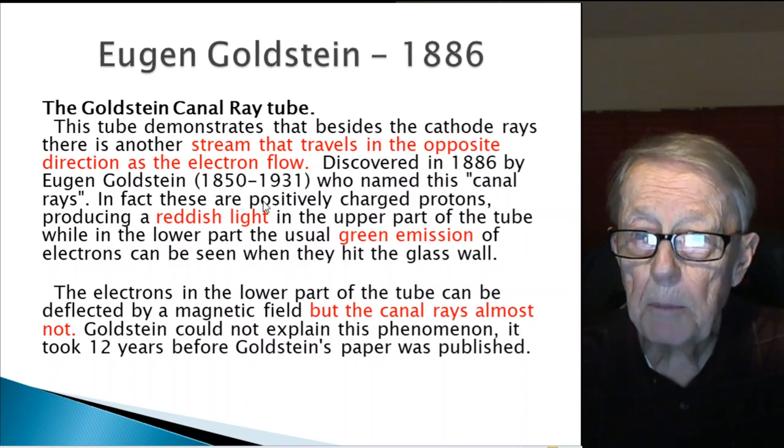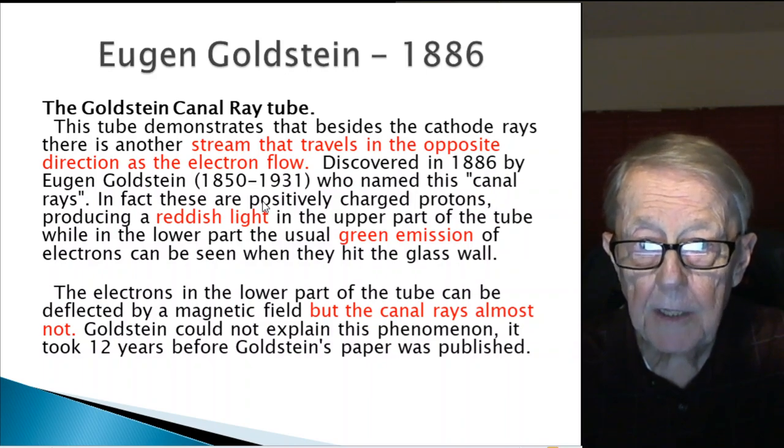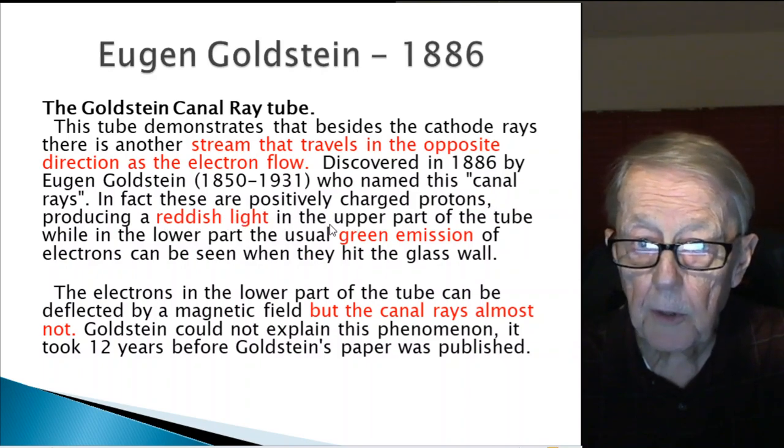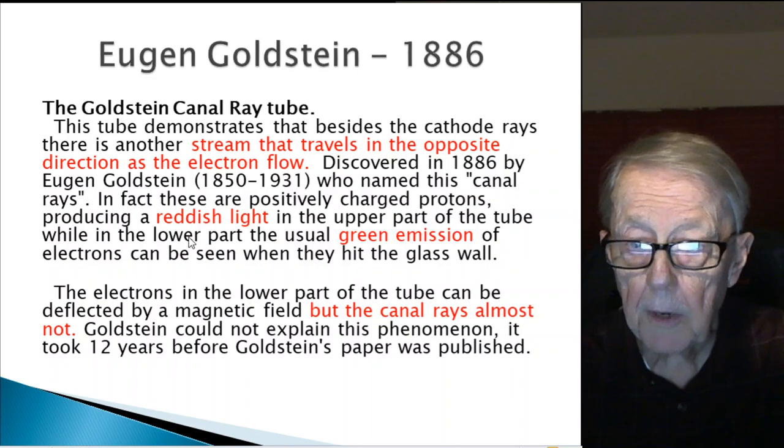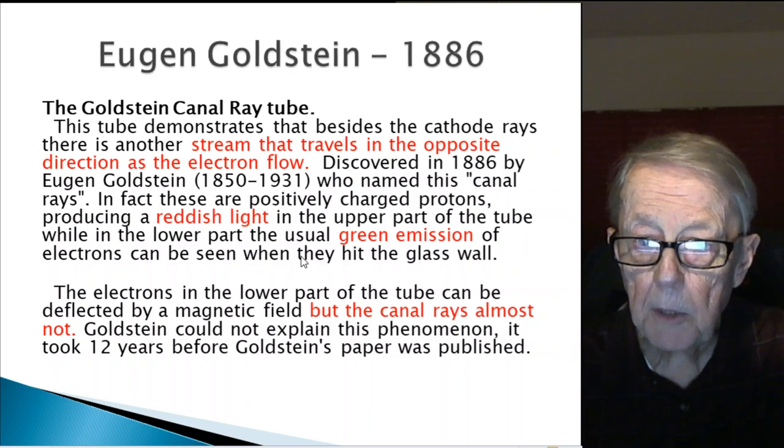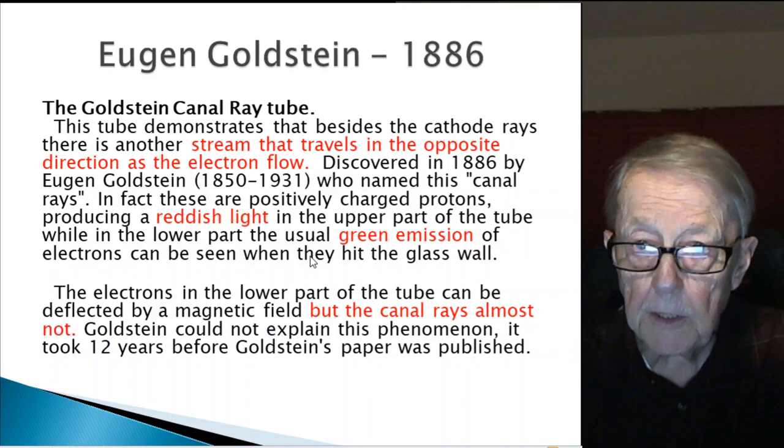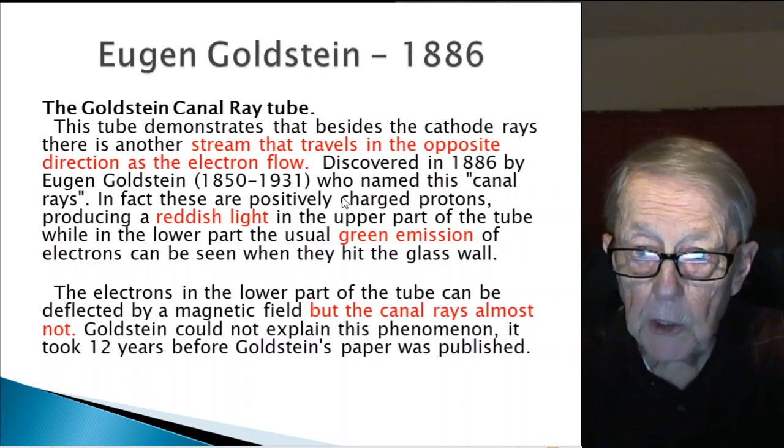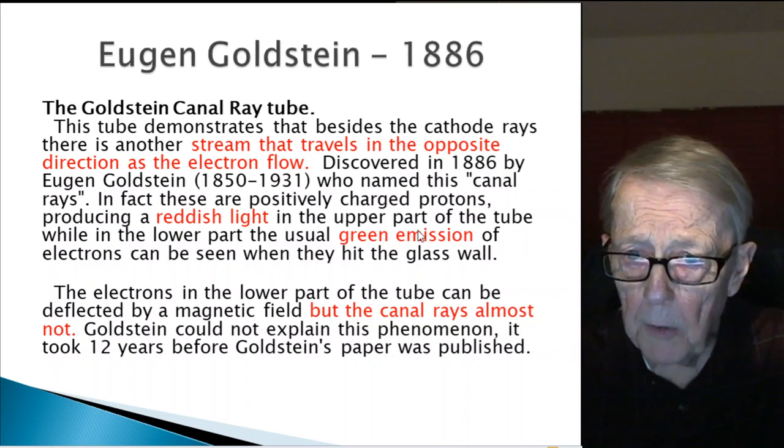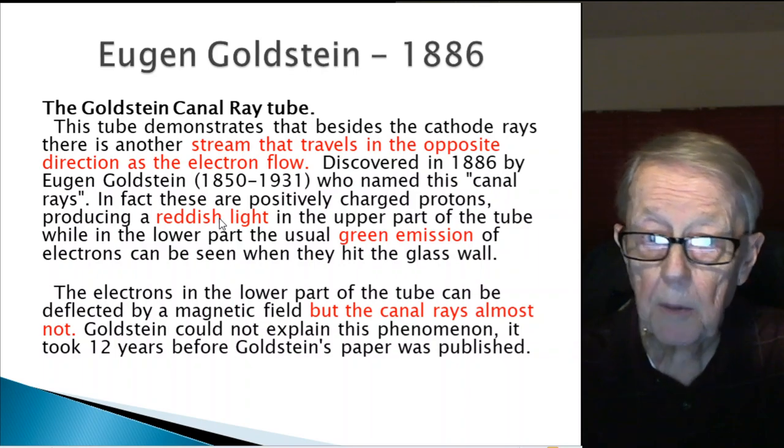In fact, these are highly positively charged protons producing a reddish light in the upper part of the tube, while in the lower part, the usual green emission of electrons can be seen when they hit a glass wall. Apparently, when these highly charged protons hit the glass wall, they emit a green light, whereas the electrons emit a reddish light.